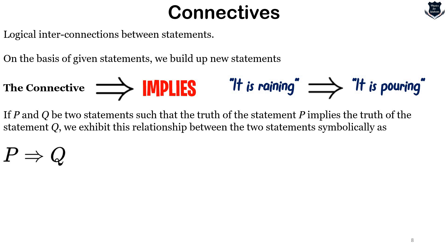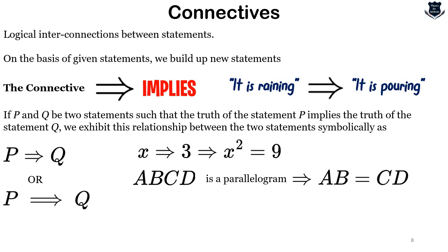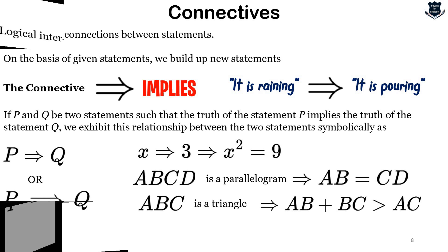In certain books you might find a longer arrow, but both mean the same thing: implies. For example, x = 3 implies x² = 9. If ABCD is a parallelogram, it implies AB = CD. If ABC is a triangle, it implies AB + BC > AC.